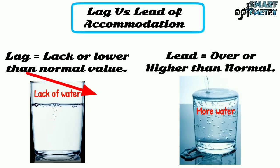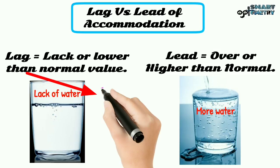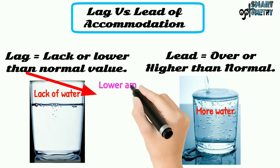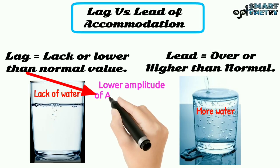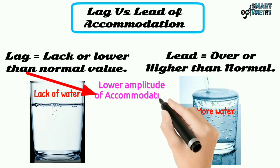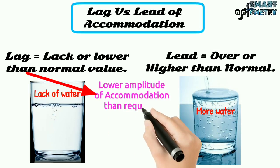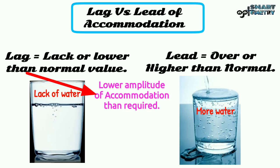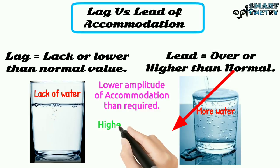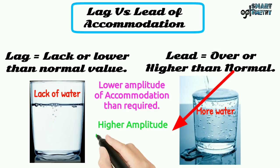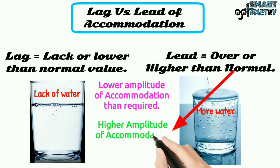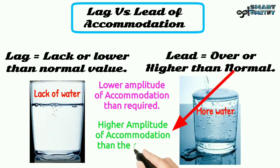Lag of accommodation means a lower amplitude of accommodation than normally required. Lead of accommodation means a higher amplitude of accommodation than required.